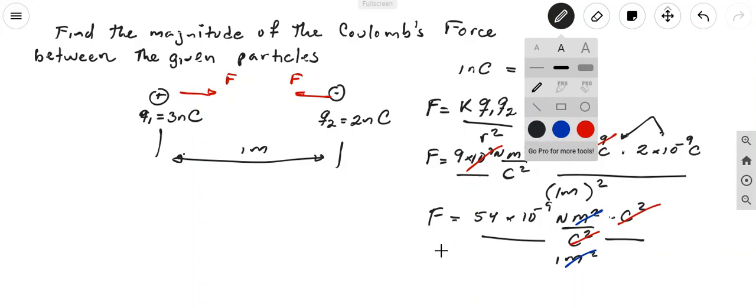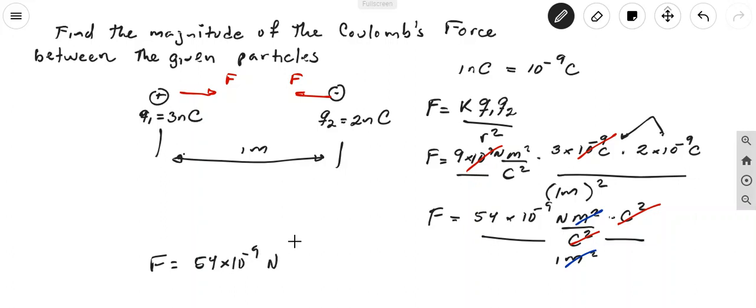So we can say that in this case the force is equal to 54 times 10 to the negative 9 newtons. So if I want to write this answer in scientific notation, I have to move the decimal point one place to the left, so the 54 becomes 5.4.